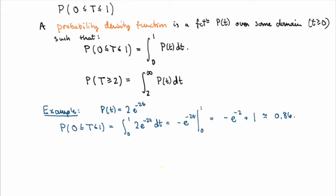This is definitely a bad probability density function for a call placed to Sha Cable, because if you've ever called Sha Cable, it will definitely take more than one minute before your call is answered.